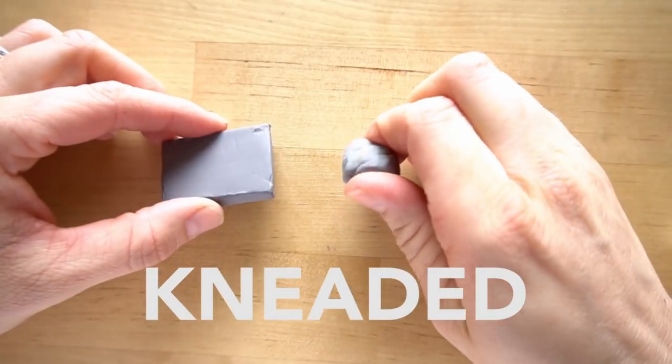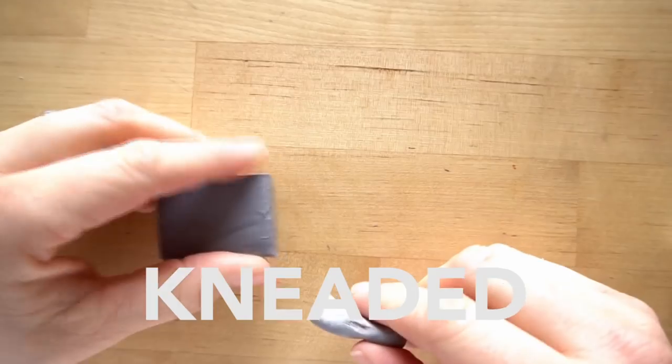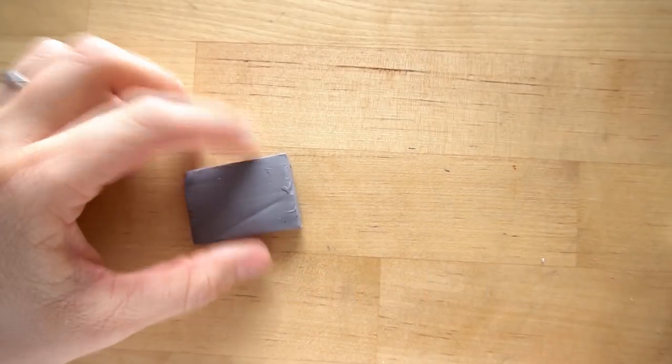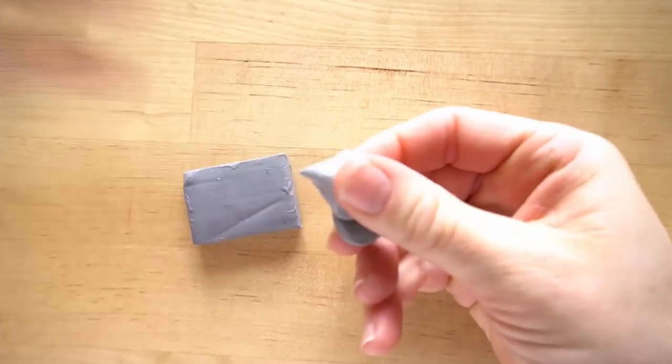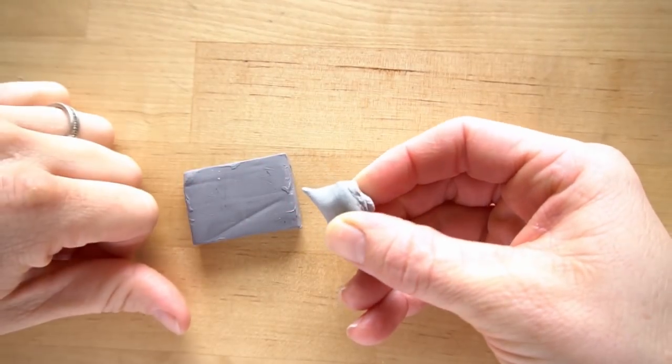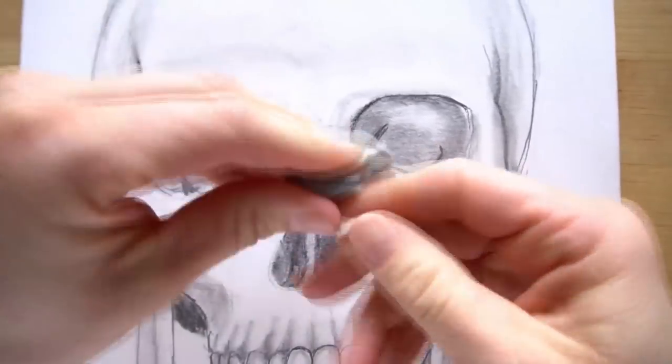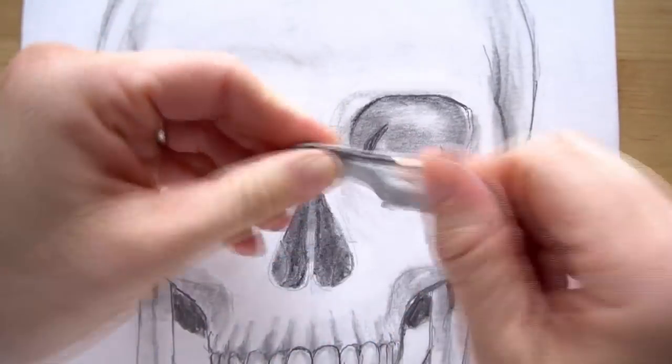The first one I'm going to talk about is the kneaded eraser. So this is what it looks like when you take it out of the package but it can be kneaded. You can knead it into a small little point so you can erase out tiny little details or highlights. Also when it gets dirty you just knead it to renew it or to clean it.